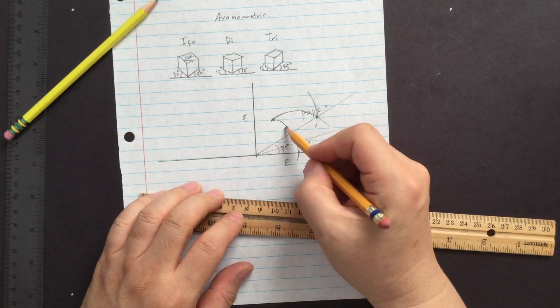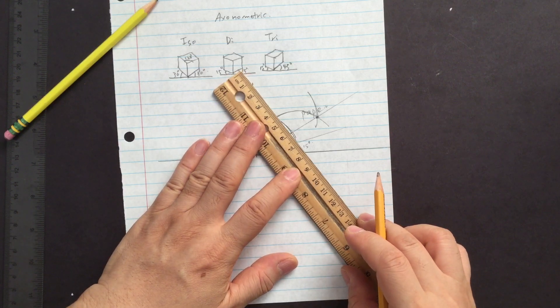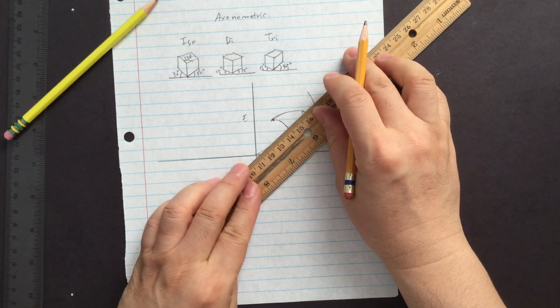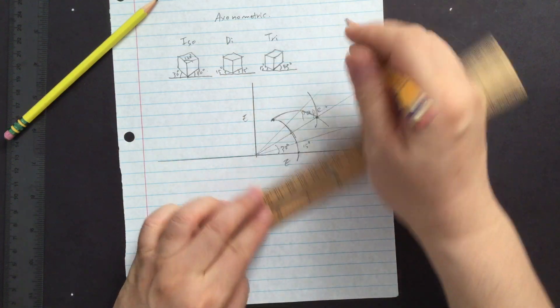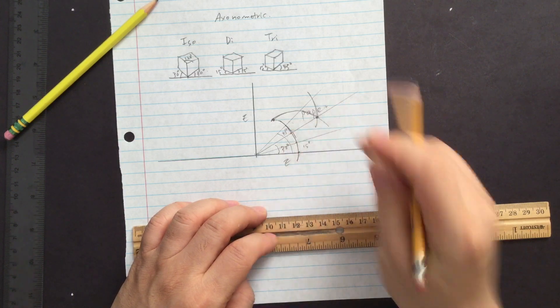And then that becomes 15 degree. So how do you find the 45. Then another 7.5 degree that you jump up. Then that's going to be 45. All together, all three, 45 degrees.